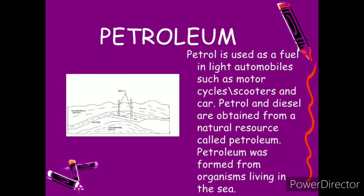Petroleum means oil of rocks — 'petro' means rocks and 'oleum' means oil, so petroleum means oil of rocks. Petroleum is a viscous, dark-colored, fluorescent liquid which occurs deep inside the earth. Petroleum is lighter than water; if we mix it with water, it will float on the surface of water.